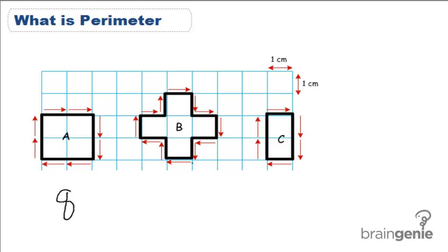For B, it goes 1, 2, 3, 4, 5, 6, 7, 8, 9, 10, 11, 12. For B, it's 12.